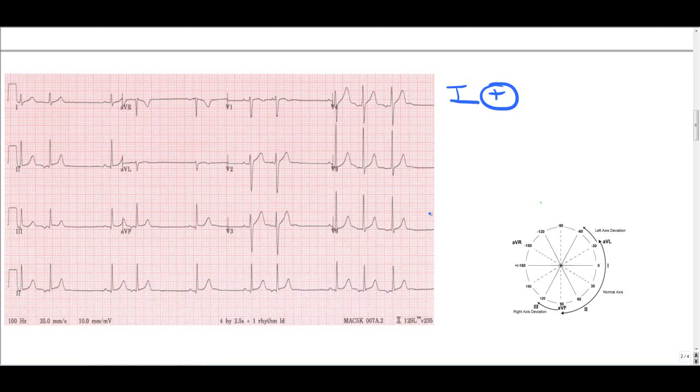Next let's look at lead AVF. In this case lead AVF is also positive. So in this case the axis must be somewhere in the lower half of the circle. Where these two areas both overlap is where our axis is. And in this case it overlaps in that lower right quadrant. Meaning the axis in the EKG is normal.